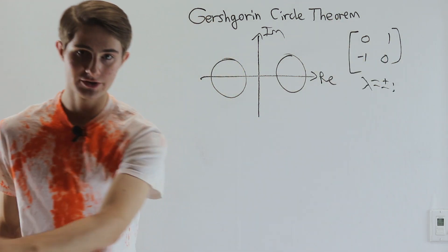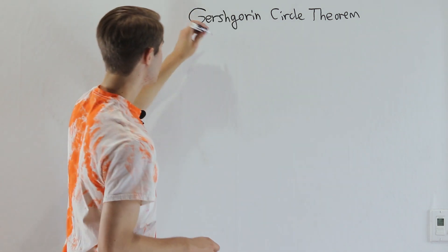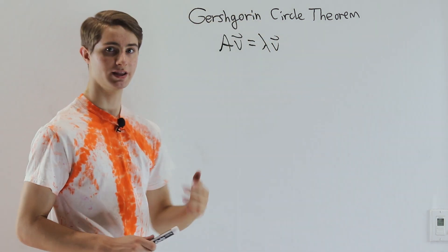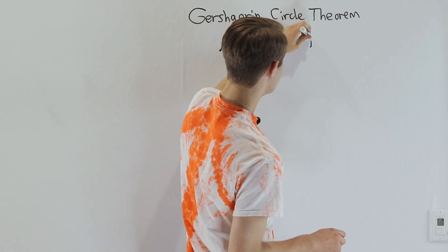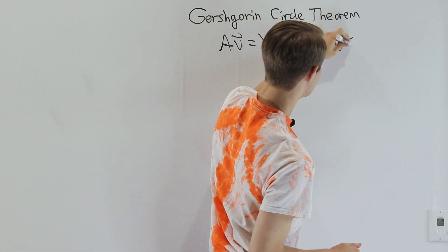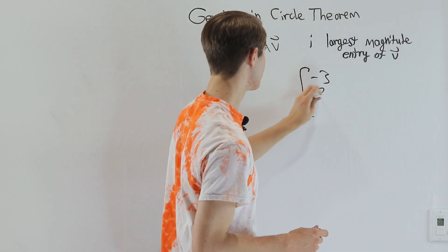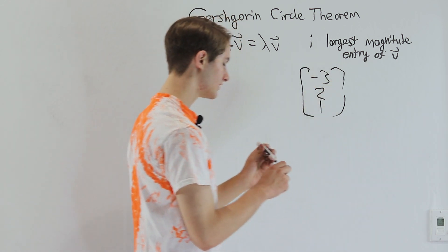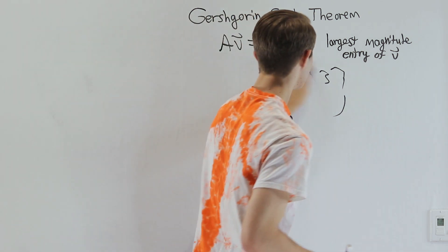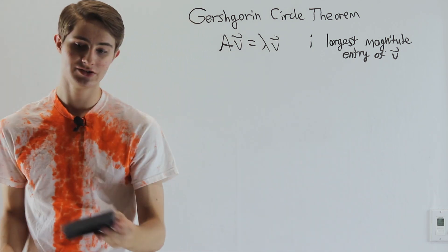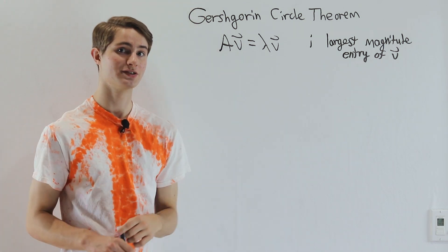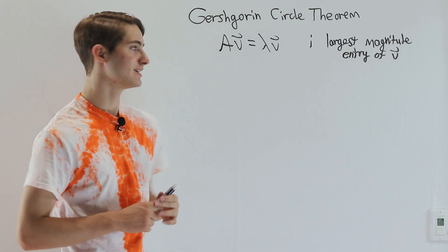Let's look at a proof for exactly why this is true. We start with the definition of an eigenvector: Av equals lambda v for our matrix A, some vector v, and number lambda. We're going to pick the index i to be the entry in eigenvector v with the largest magnitude. For example, if our eigenvector were [-3, 2, 1], we would choose i equal to 1 as the entry with the largest magnitude because negative 3 has the largest magnitude. We don't actually need to know what i is — we just need to know it exists, since every eigenvector is non-zero, so one entry must be the biggest.